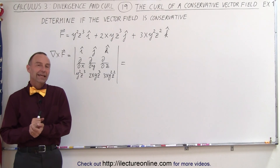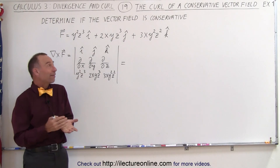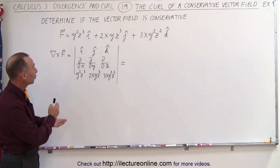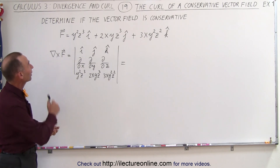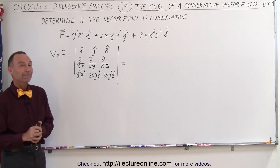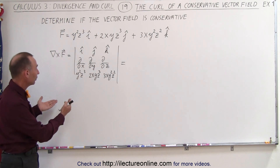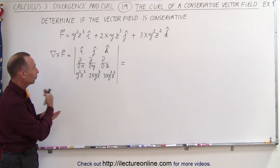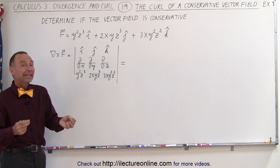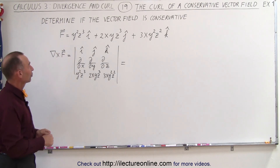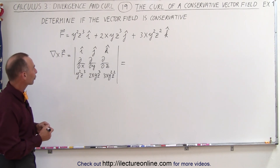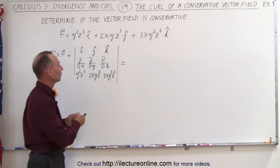Welcome to ElectronLine. Here we have an example of how to determine whether or not a particular vector field is a conservative vector field. We do that by taking the curl. If the curl equals 0, it is conservative; if it's not equal to 0, it's not conservative. So let's go ahead and find the curl of this vector field.